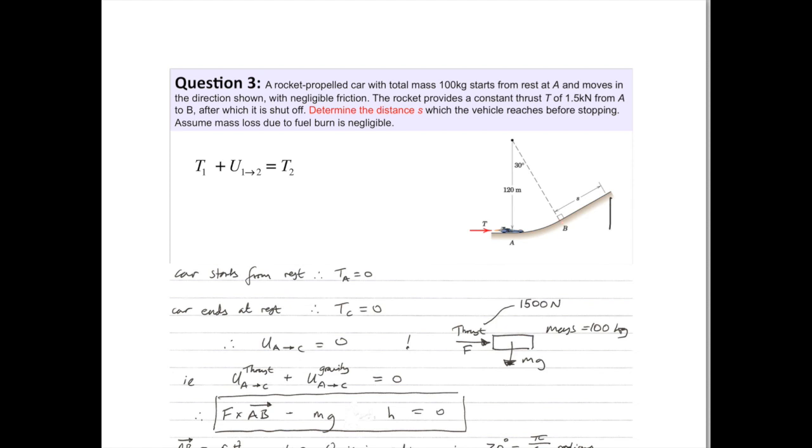And you're going to need to know the vertical height in order to find out the kinetic energy exchanged. So we've got this equation: T_A, kinetic energy at the beginning is equal to the work done between A and C, which is equal to kinetic energy at C.